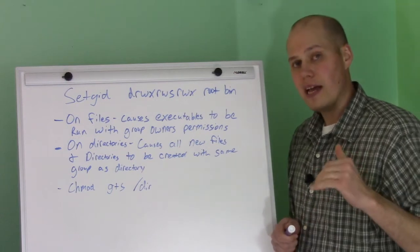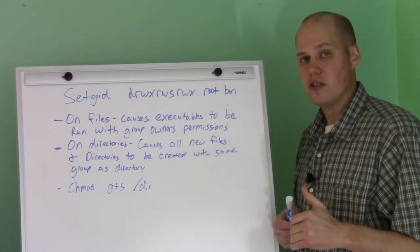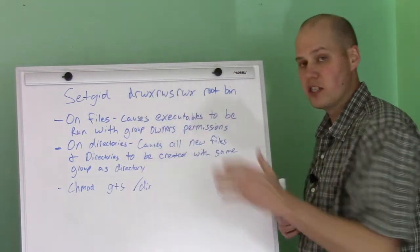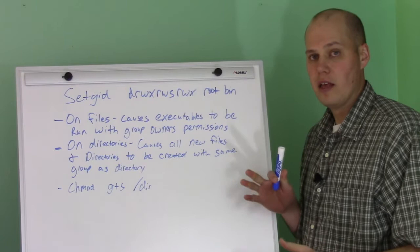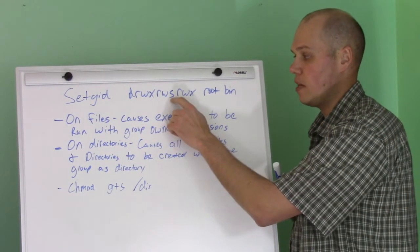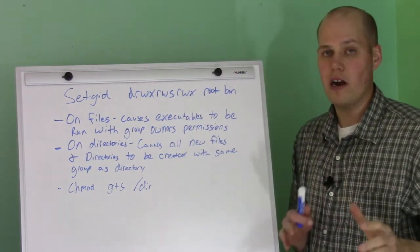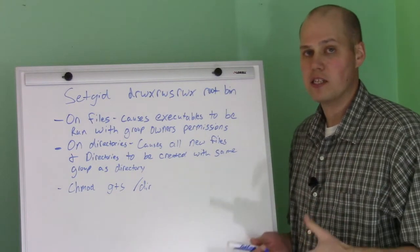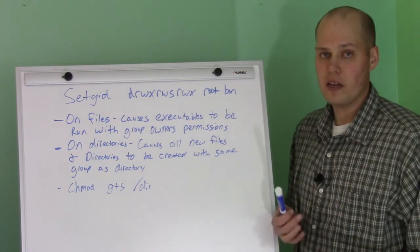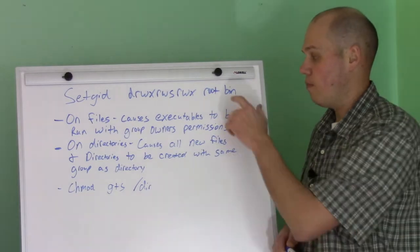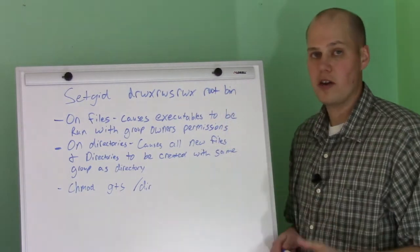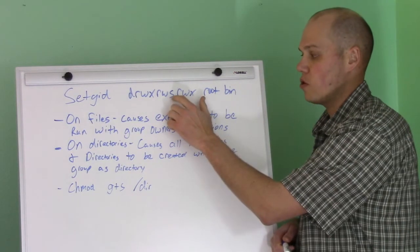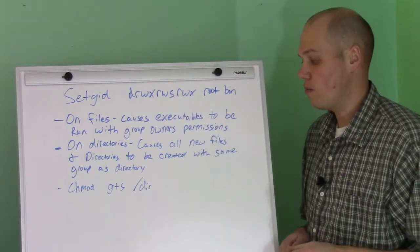This only applies to new files and directories you put in the directory. If you have an existing directory with a bunch of stuff in it and you change it to have the set GID bit, it's not going to go through and change what's already there — it only applies to new content placed in there. If you wanted to change what's already in there, you'd have to do that manually with a chmod command.